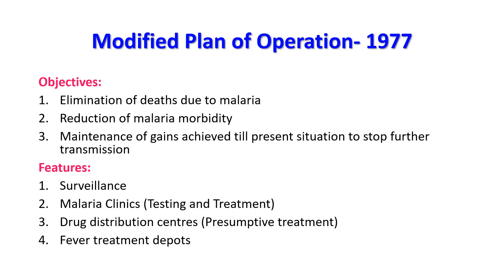The Modified Plan of Operation aimed at elimination of deaths due to malaria, reduction of malaria morbidity, and maintaining the gains achieved. Main features included a surveillance mechanism, malaria clinics for testing and treatment, drug distribution centers providing presumptive treatment based on symptoms, and fever treatment depots.